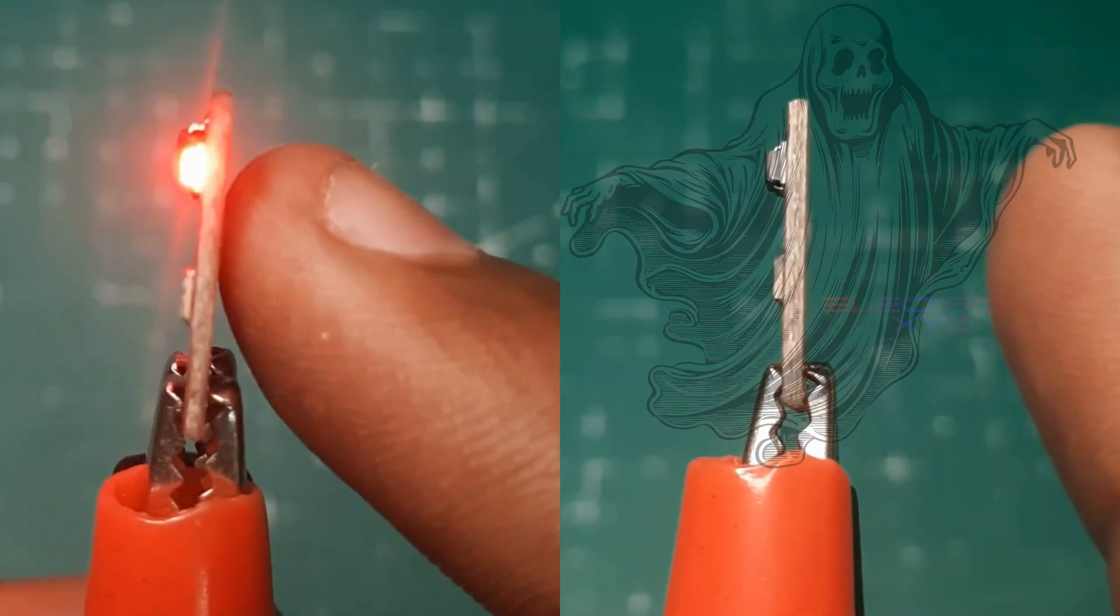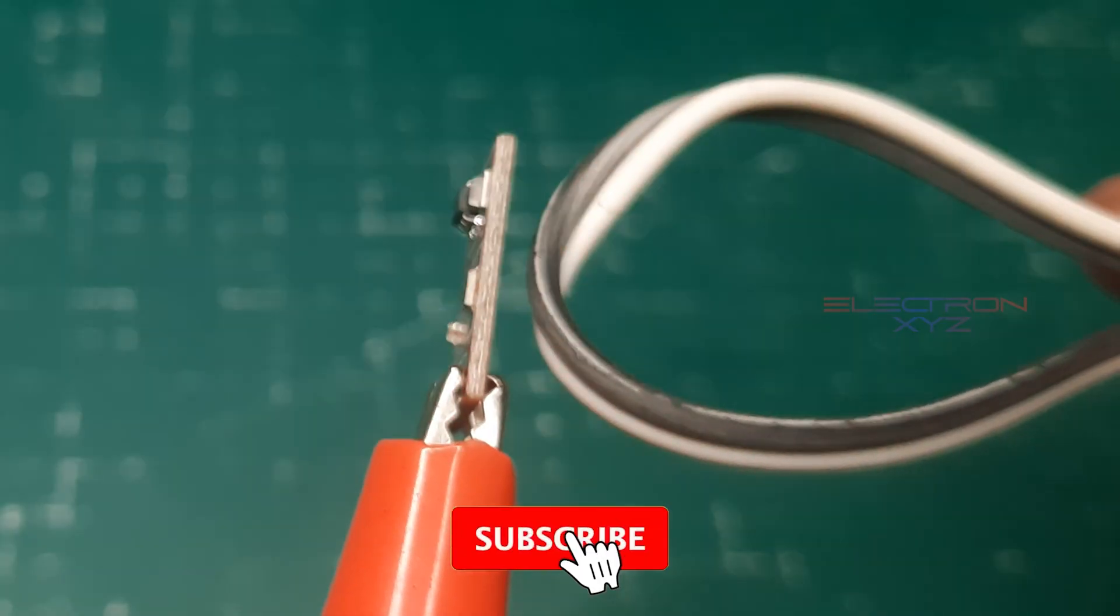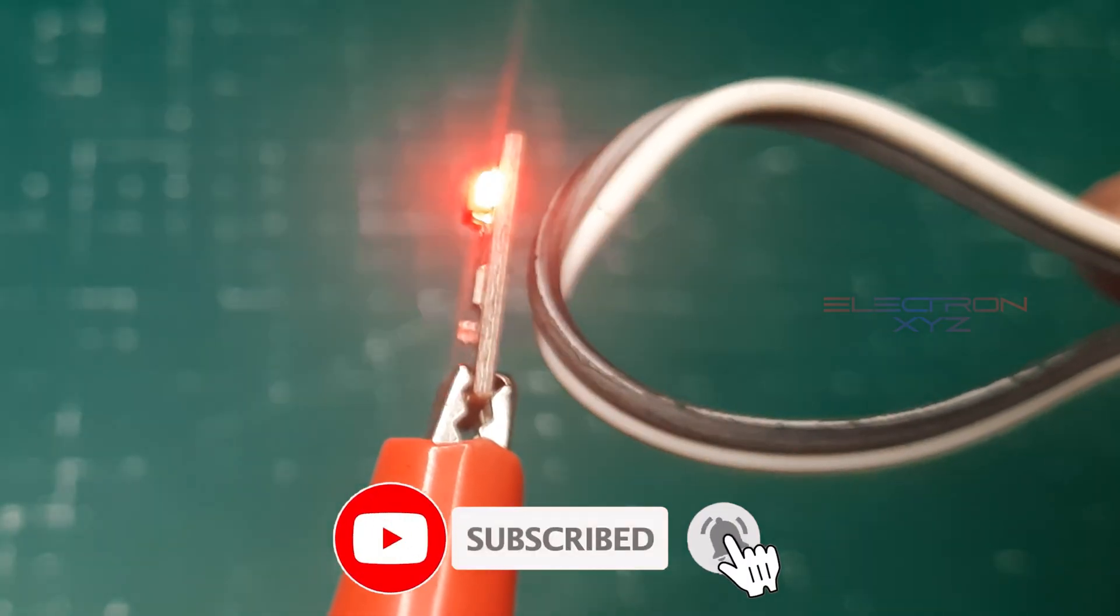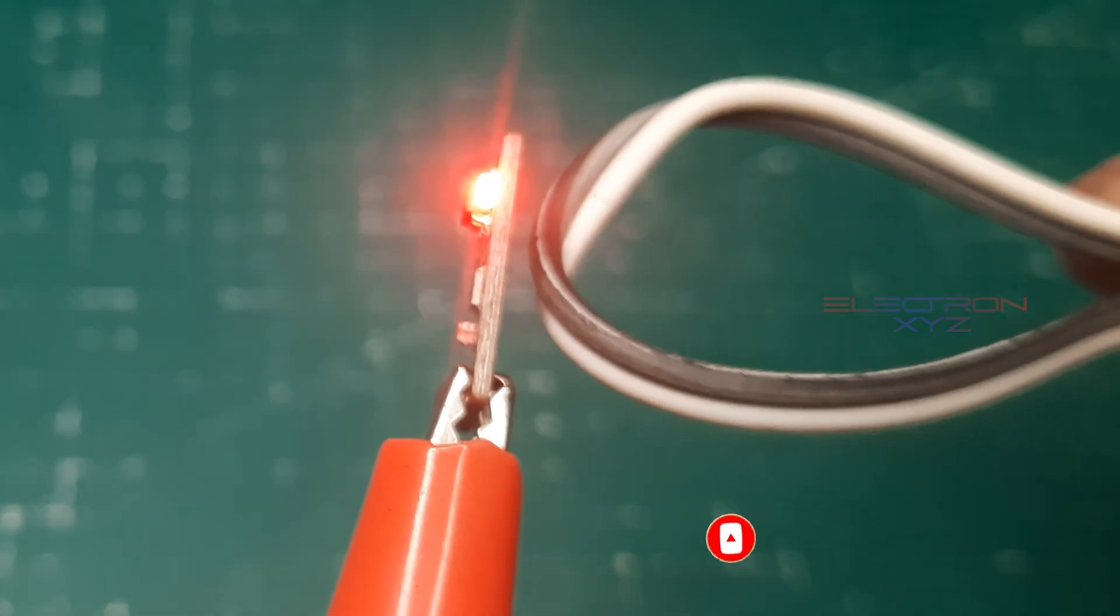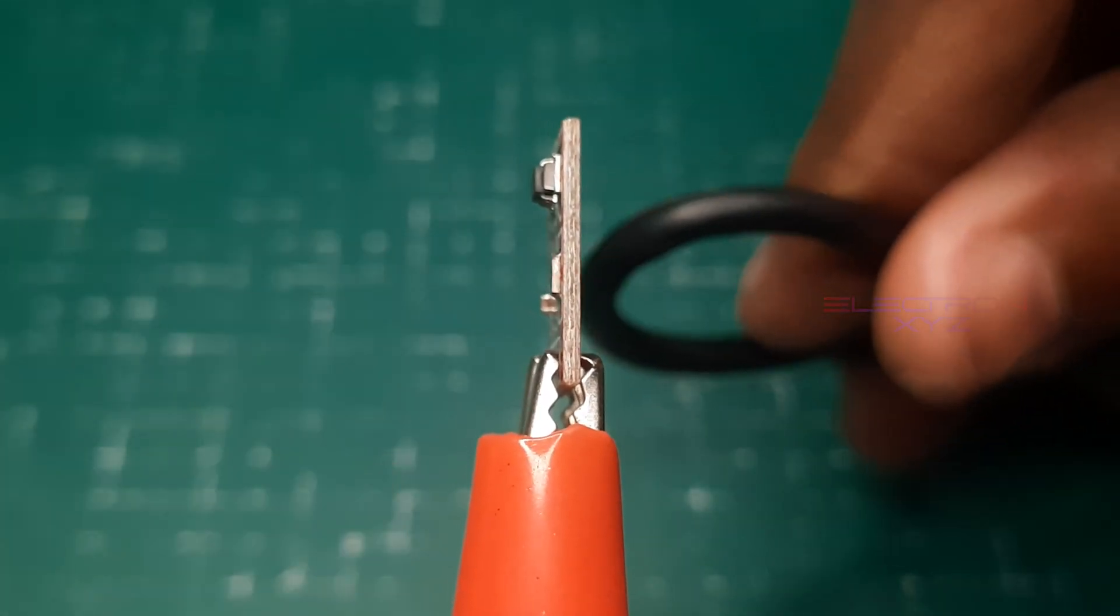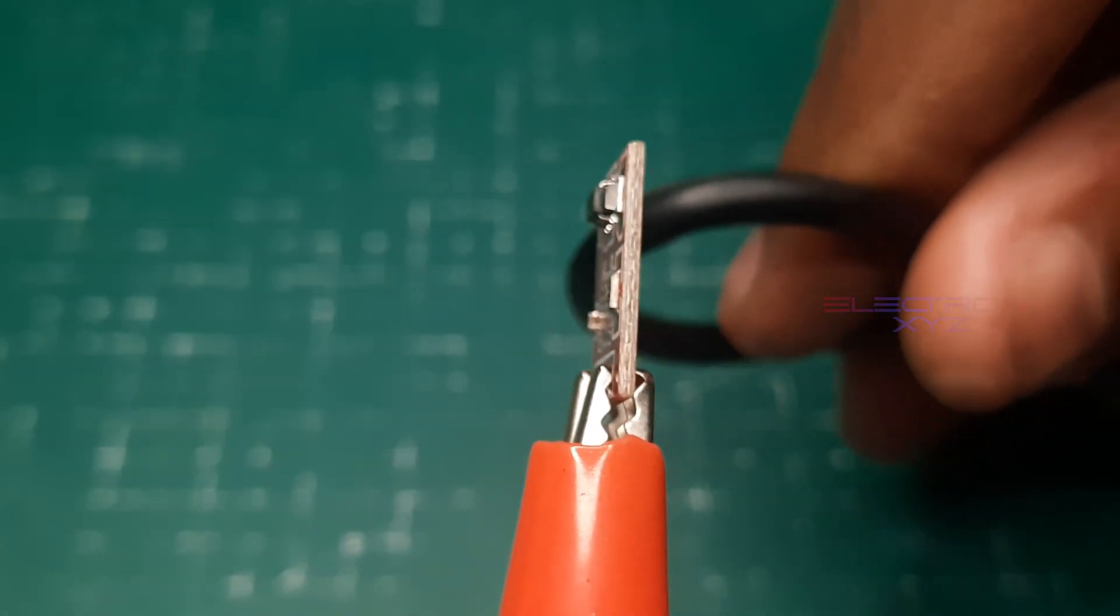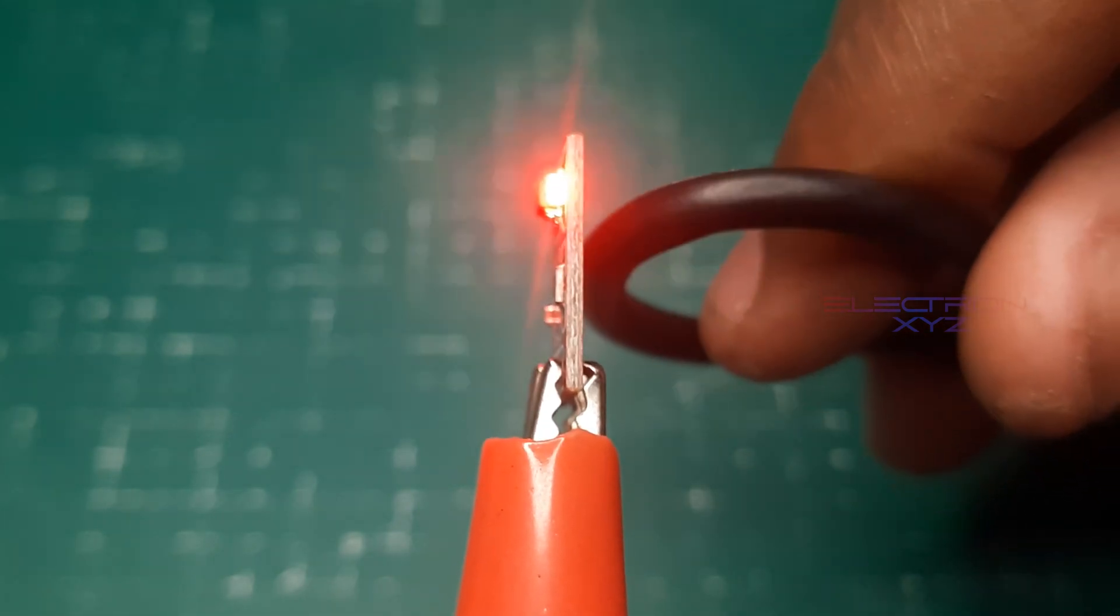Two main culprits are causing those false inputs. One: electrical noise. Imagine tiny electrical gremlins zipping around your wires, confusing the sensor into thinking there's a touch even when there's not. This noise can come from power supplies or nearby electronics.